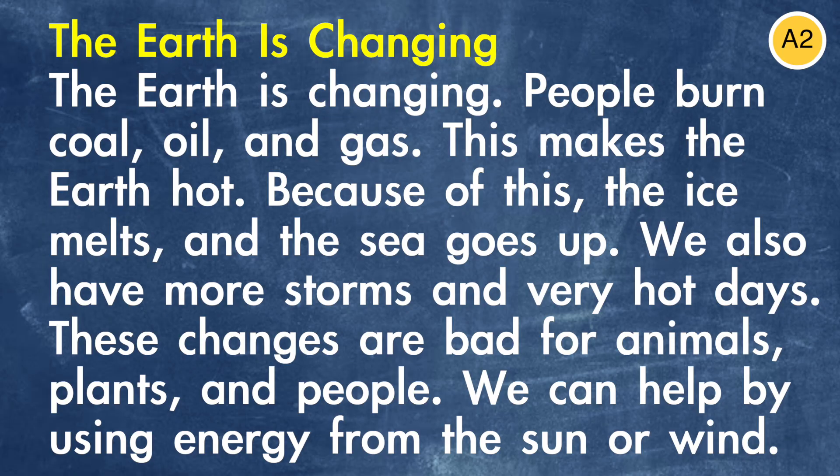Let's take a look at A2 level. Pause the video and read this text by yourself before I go through it with you. The title is 'The Earth is Changing.' People burn coal, oil and gas. This makes the earth hot. Because of this, the ice melts and the sea goes up. We also have more storms and very hot days. These changes are bad for animals, plants and people. We can help by using energy from the sun or wind.